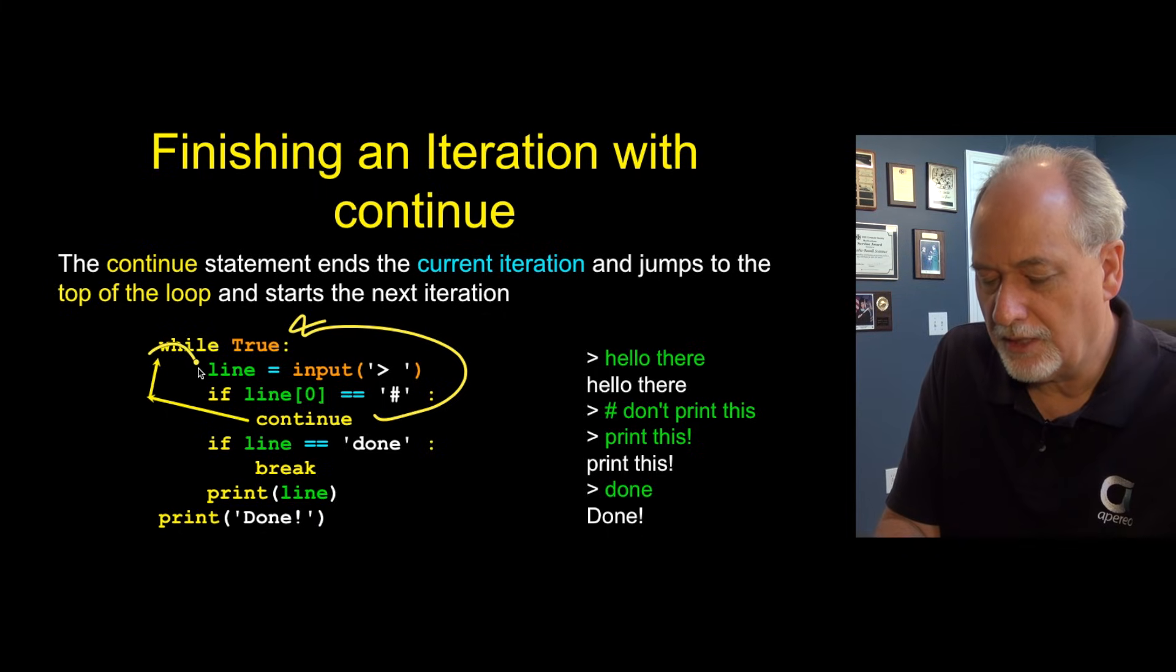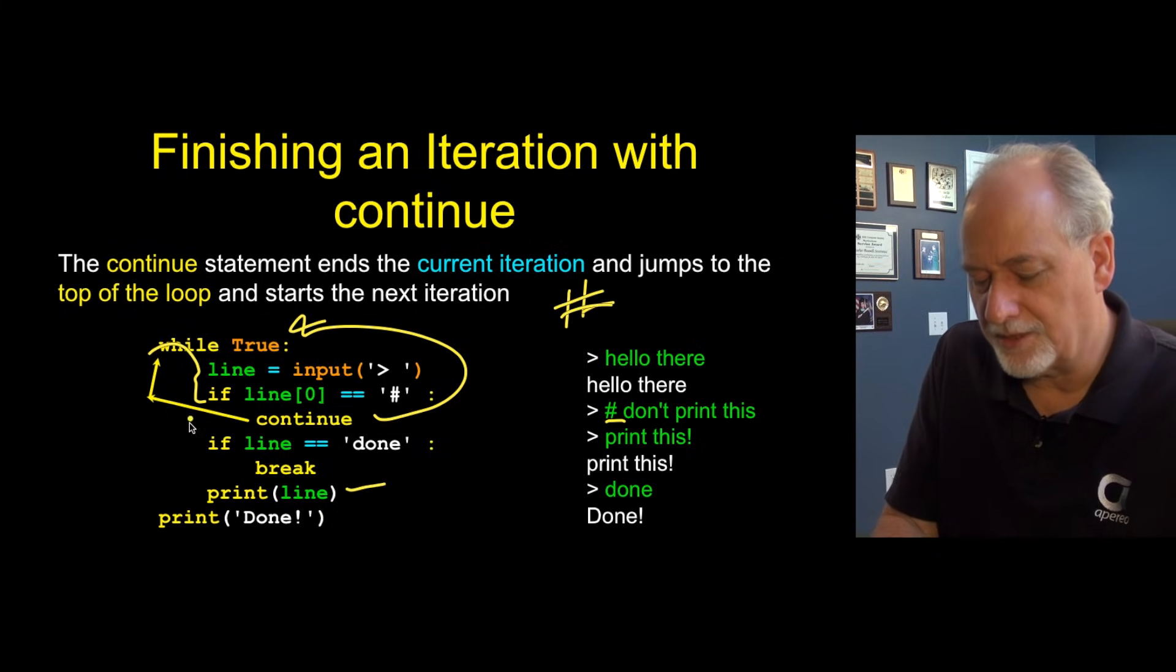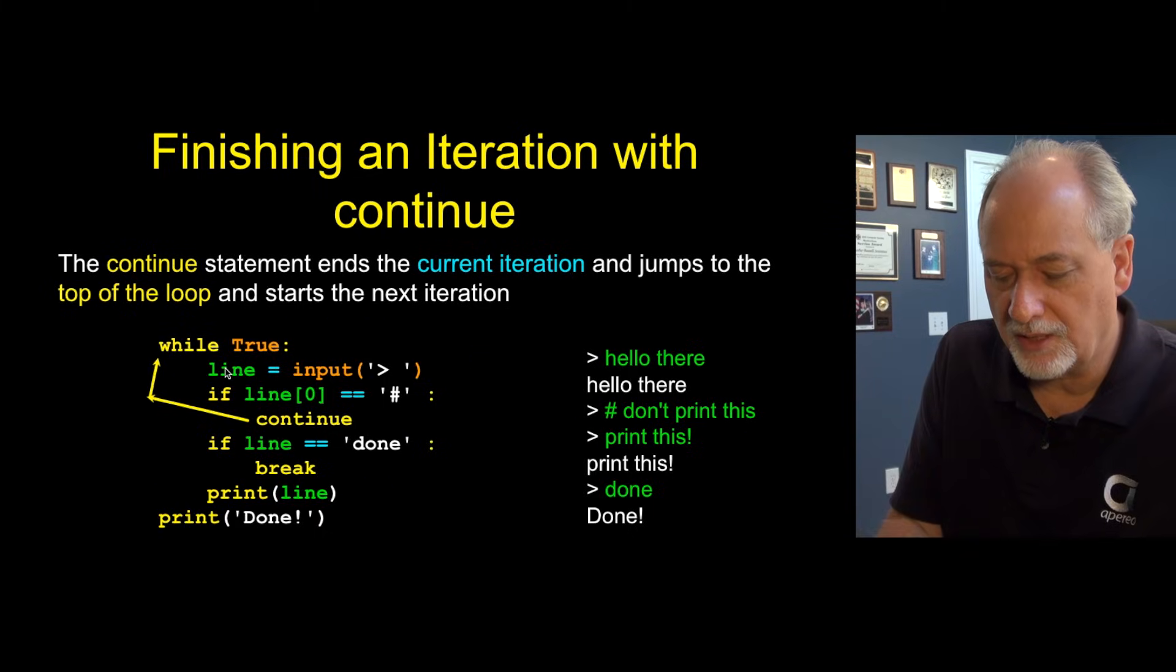Go up back to the top of the loop. And so here we read a line. If the first character is a pound sign, line sub zero, if that first character is a pound sign, we're going to skip it. And this is a way for us to make like little comments in our typing. And then we print, if the line is done, we get out, and otherwise we print it. And so that's why there is no printout here, because it comes in, runs.